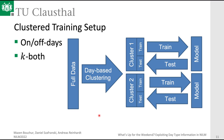For the on-off days and k-both setups, we train two models. We first apply clustering to the full dataset to obtain cluster 1 and cluster 2. We then split each cluster independently into training and testing subsets, train a separate model per cluster, and at test time use the corresponding model based on which cluster a given day belongs to.